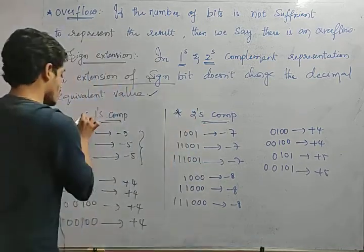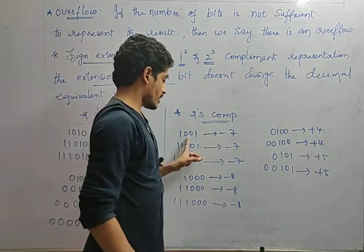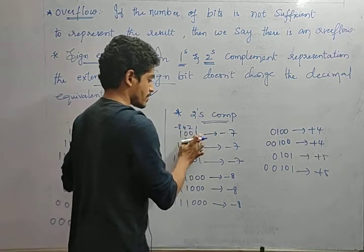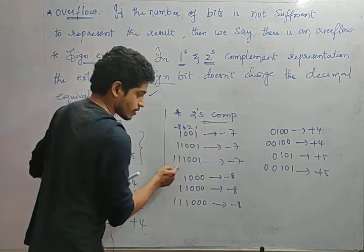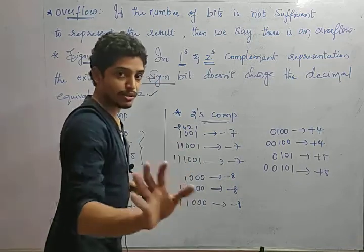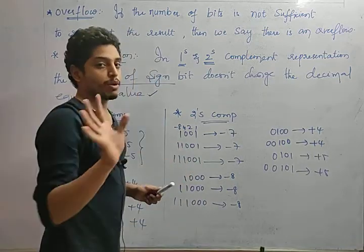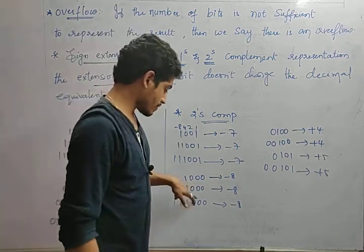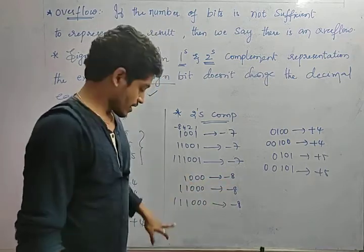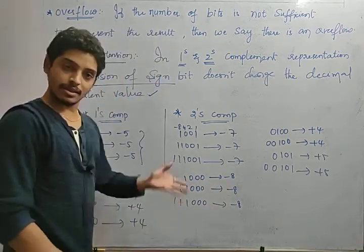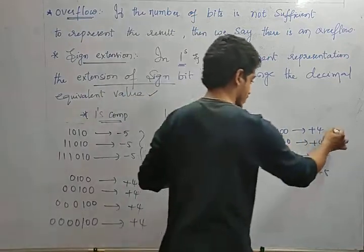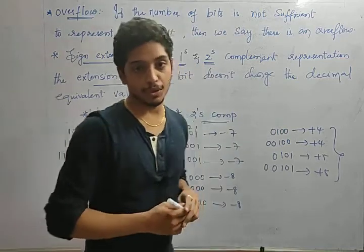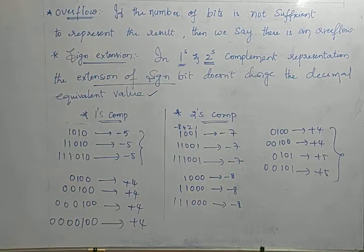In 2s complement, for example, 11000 represents minus 7 (minus 8 plus 1). You can keep any number of 1s and the value never changes. Similarly, 11110001 gives minus 8 only — no matter how many ones you add. For positive numbers it should be in true binary form, and with any number of leading 0s the value won't change. This is the concept of overflow and sign extension.